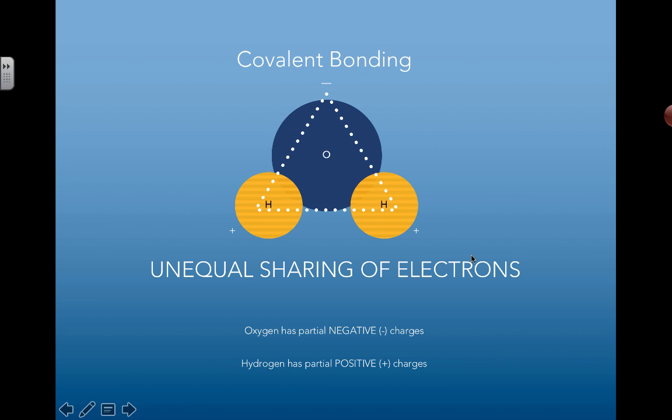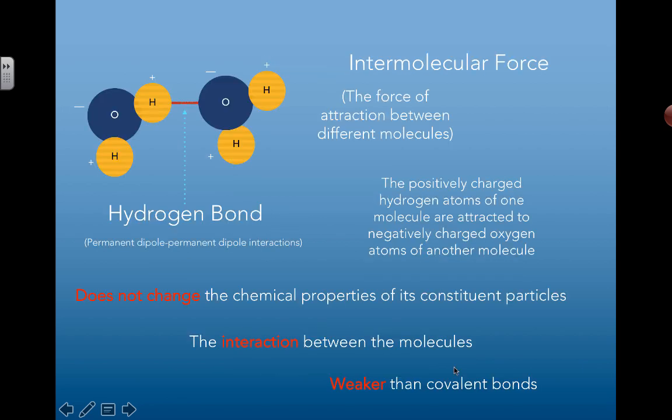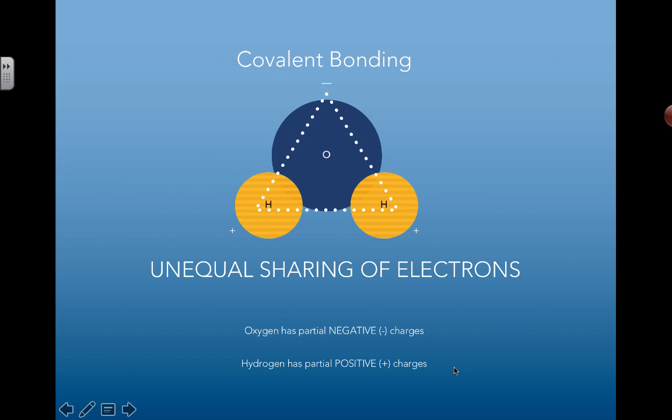Because of this unequal sharing of electrons, oxygen has a partial negative charge and hydrogen has a partially positive charge. This has huge consequences for the interaction of water molecules with themselves and with other molecules as well.